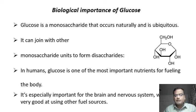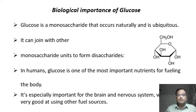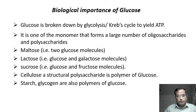Glucose is one of the most important carbohydrate molecules and plays a very important role in animals, plants, and other organisms. Glucose is known as the source of energy — in humans, other animals, and plants, it is one of the most important nutrients for fueling the body. Especially for the nervous system, glucose is the only source of energy, because nerve cells cannot use other chemicals as an energy source.